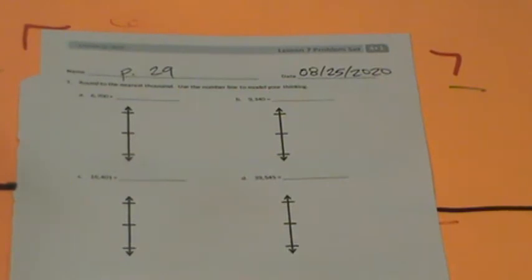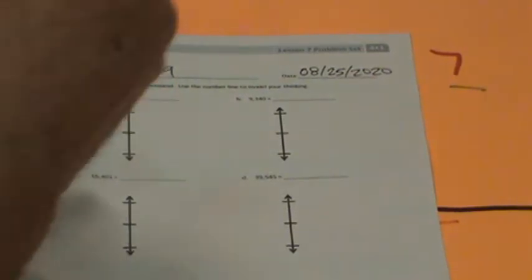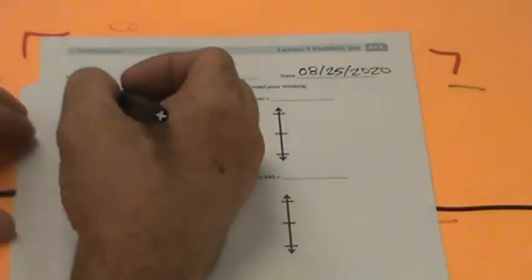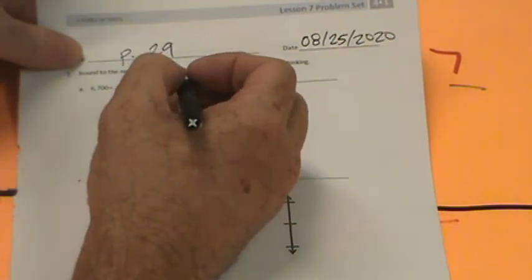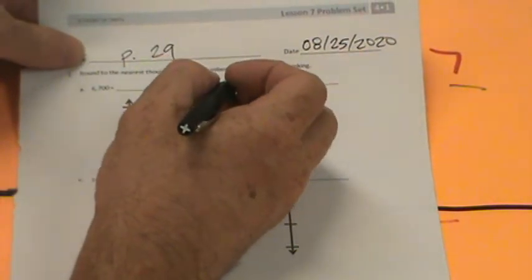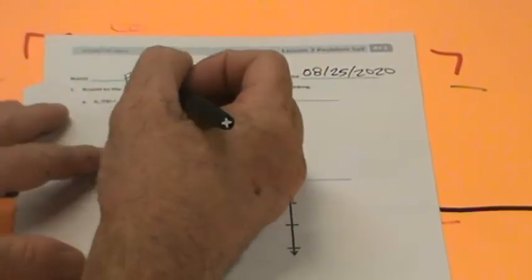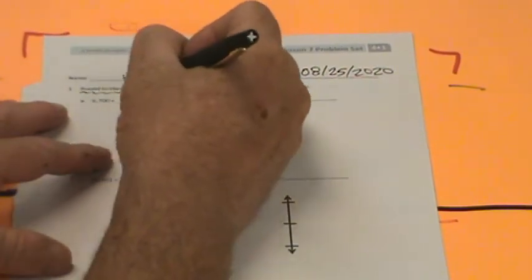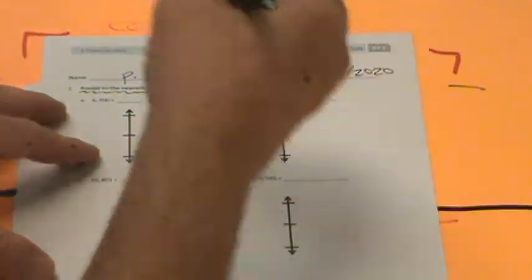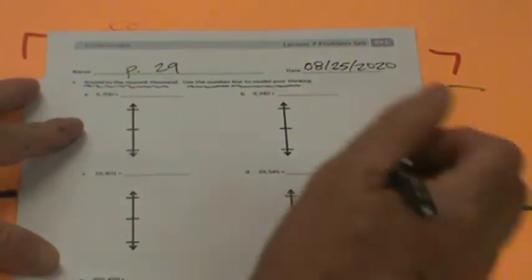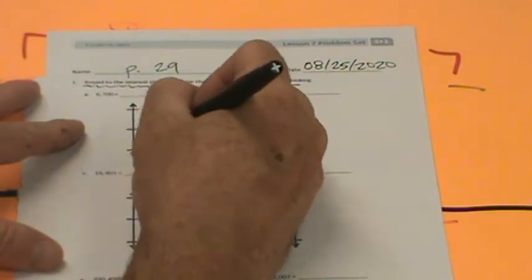What we're being asked to do in this problem set is round to the nearest thousand. Use the number line to model your thinking. We have 6,700, so we're going to put 6,000 down here because we're rounding to the nearest thousand, and we'll put 7,000 up here.